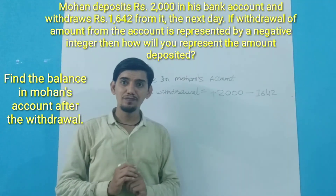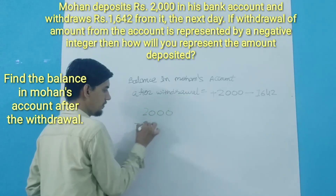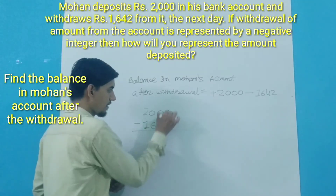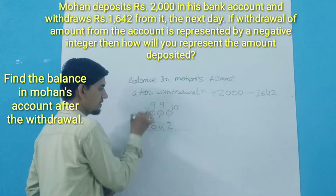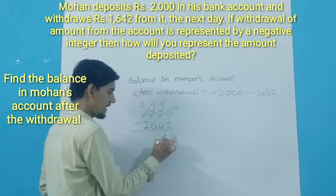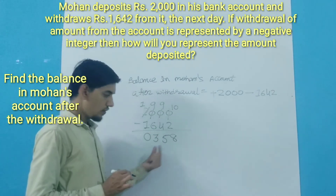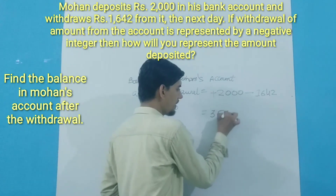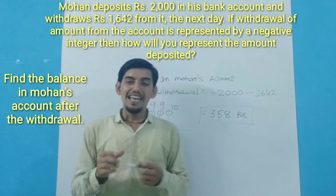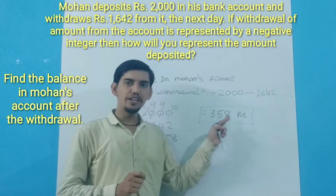Simple subtraction: 2000 minus 1642. Working through the subtraction: 10 minus 2 is 8, 8 minus 4 is 5 (with borrowing), 9 minus 6 is 3, 1 minus 1 is 0. The result is Rs. 358. After the withdrawal, the balance in Mohan's account is Rs. 358.